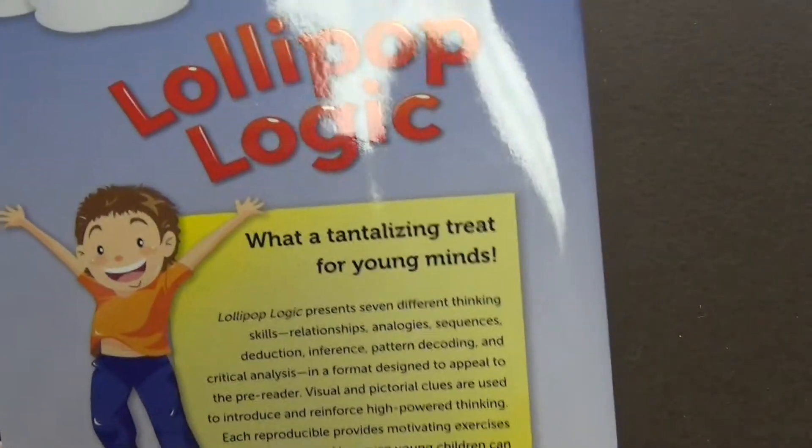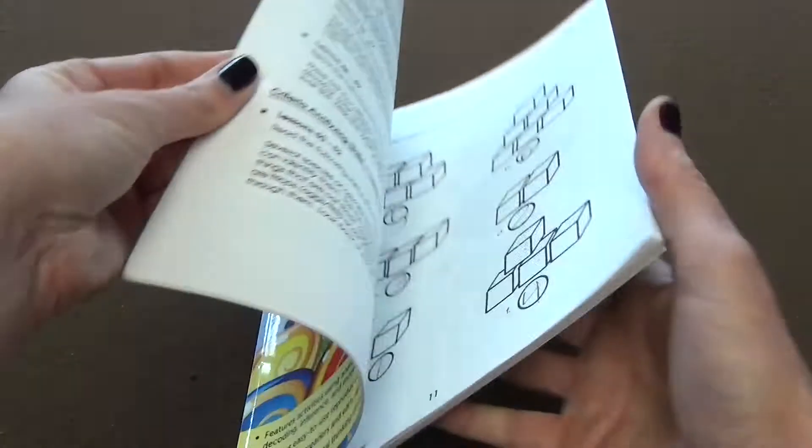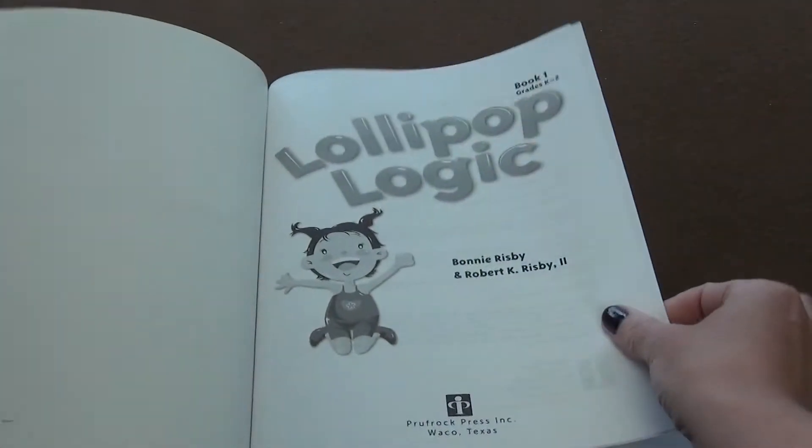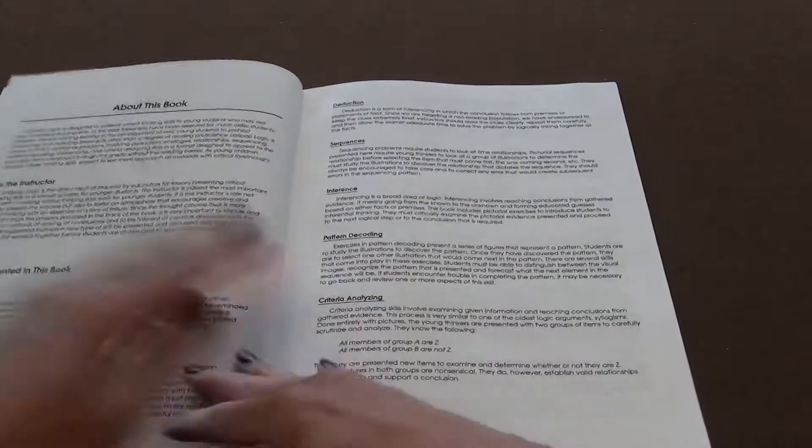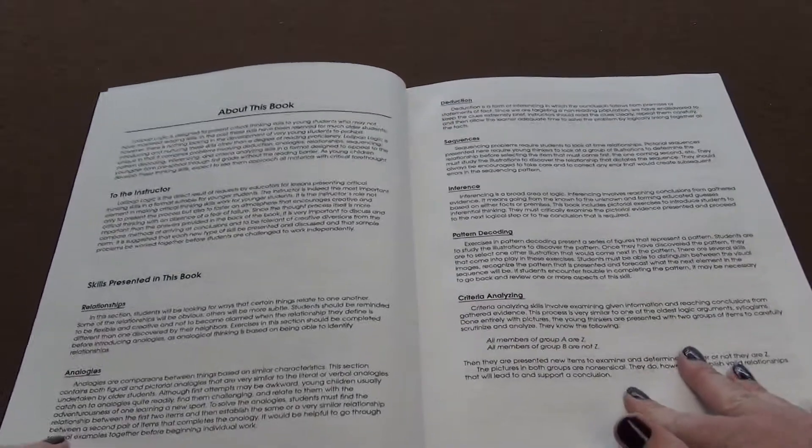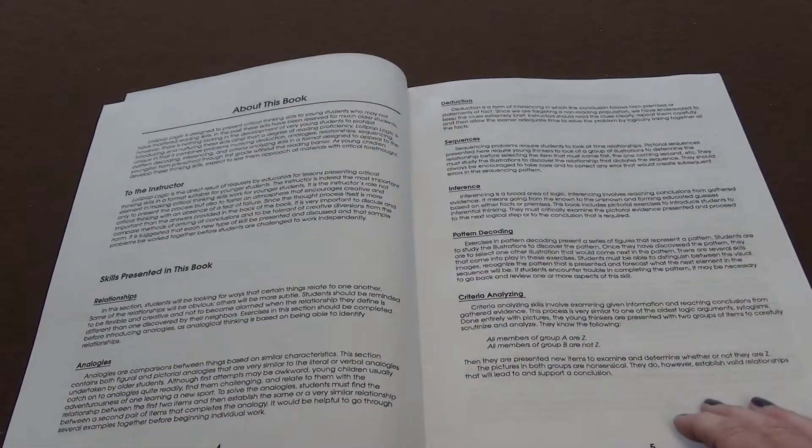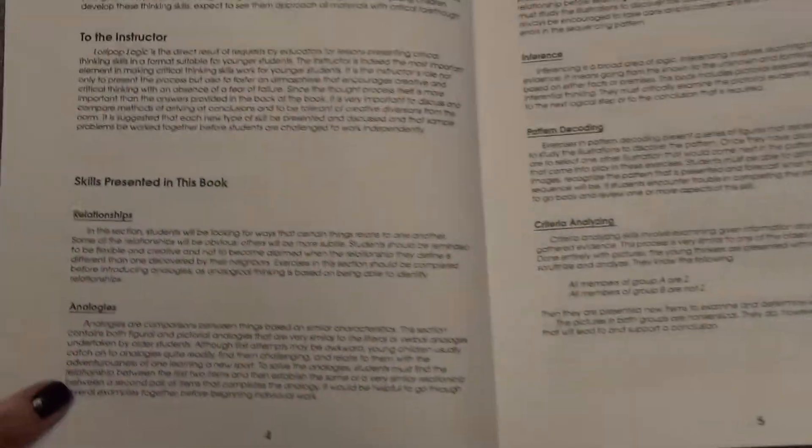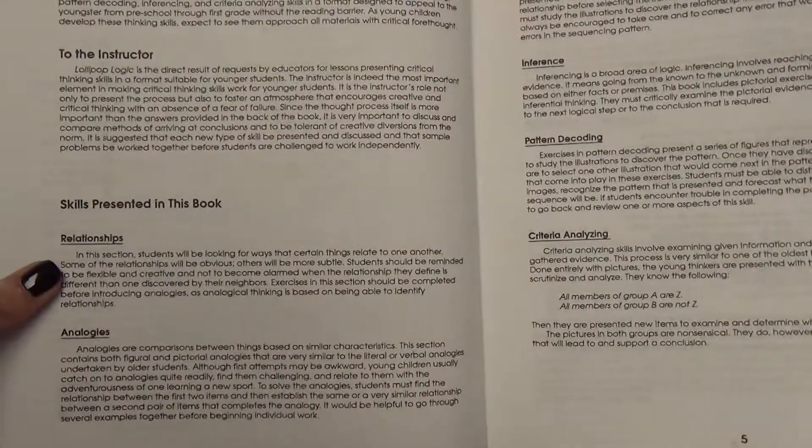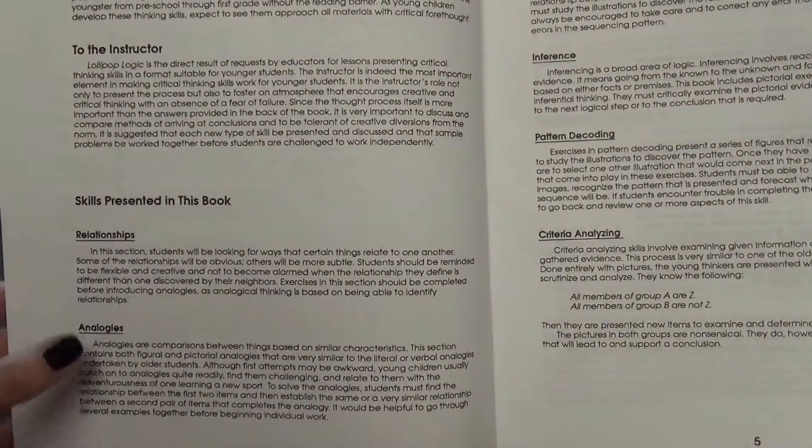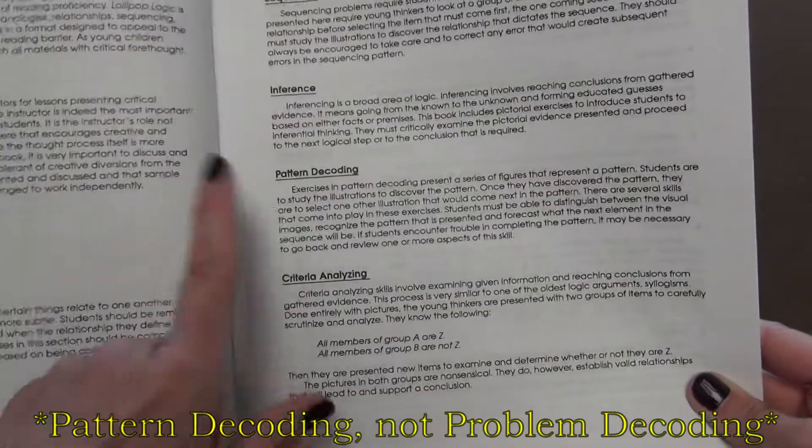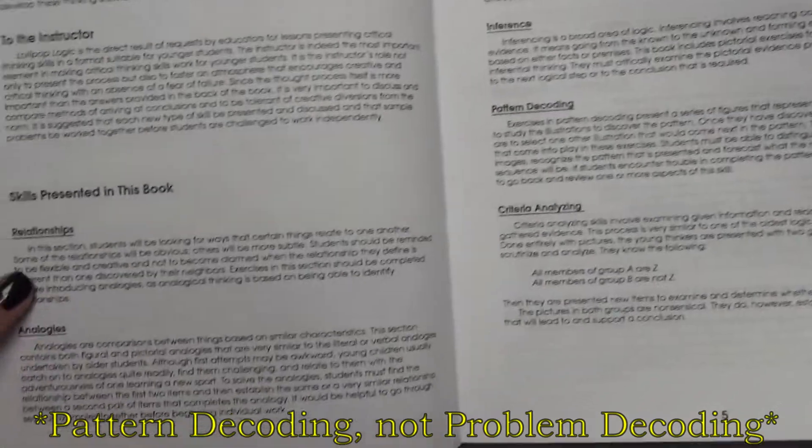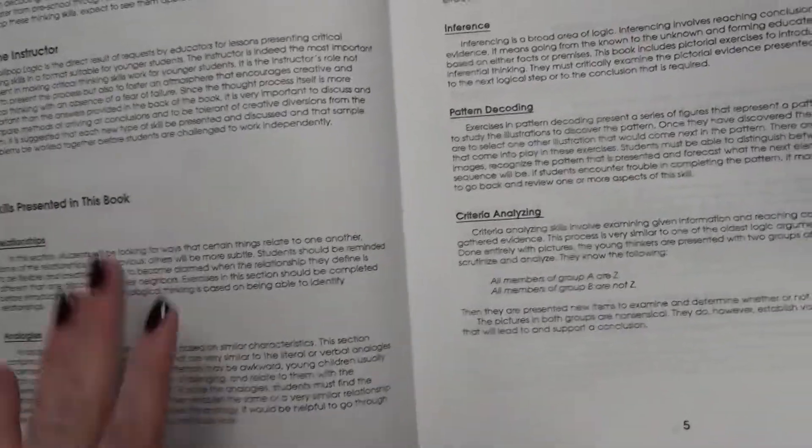So this is called Lollipop Logic. And at the beginning, it tells you about the book and how you might want to introduce each of these skills. It tells you that in these sections, you will definitely want to introduce certain subjects before you would go on. So you wouldn't want to just jump into problem decoding. You would want to start with relationships and work your way through.